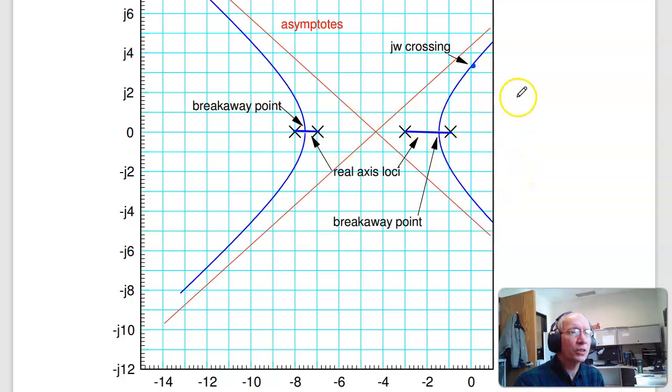Asymptotes. I've got four poles, so 4 times theta is 180 degrees, gives me four answers. I'm at plus 45 degrees, minus 145 degrees, plus 135 degrees, minus 135 degrees. And the center of mass is the average. That intersects right here. The average of minus 1, minus 3, minus 8, minus 9 is right there.